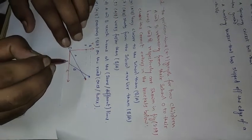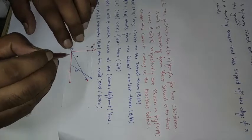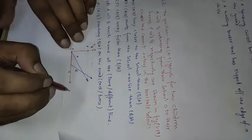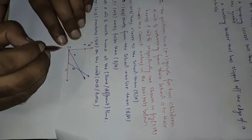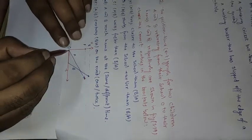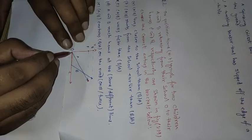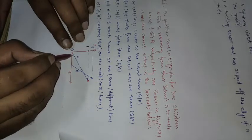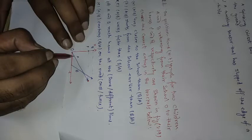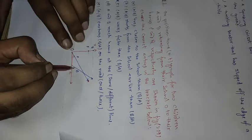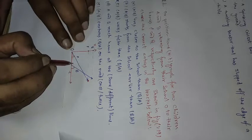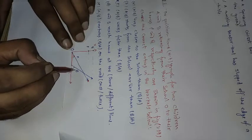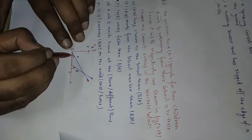Two children started running from their school. Child A starts moving from point O. This is the graph of his running. The slope of this graph is less than that of B. That means B will run faster than A, because the slope of the XT graph always represents speed or velocity. Whose slope is steeper, that child's velocity will be more.